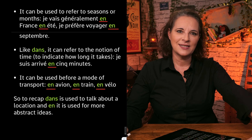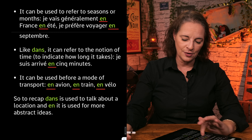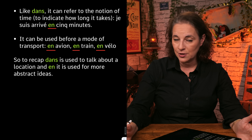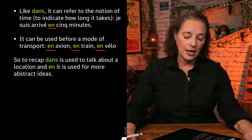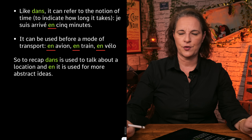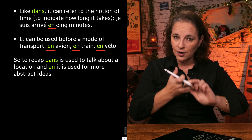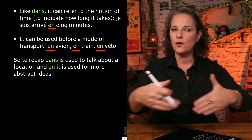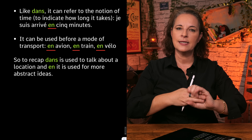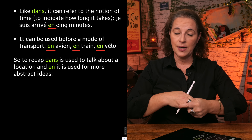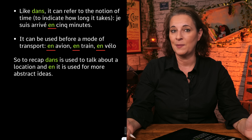To recap: dans is used to talk about a location, and to refer to what's going to happen in time. En is used for more abstract ideas — like transport, going to a country, en face de as a location phrase, and also time in terms of how long something took. Je l'ai fait en cinq minutes — I did that in five minutes.